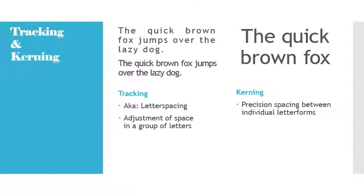Like we discussed in Typography One, tracking — also known as letter spacing — is the adjustment of space in a group of letters. Those letters could be forming words, sentences, or paragraphs. Kerning is really focused on the precision spacing between individual letter form pairs. On the slide you can see a couple versions of tracking — whether the tracking is really loose in the top paragraph or really tight in the second paragraph. Kerning is something we do for headlines, making sure there is an optically equal amount of negative space between individual letter pairs.